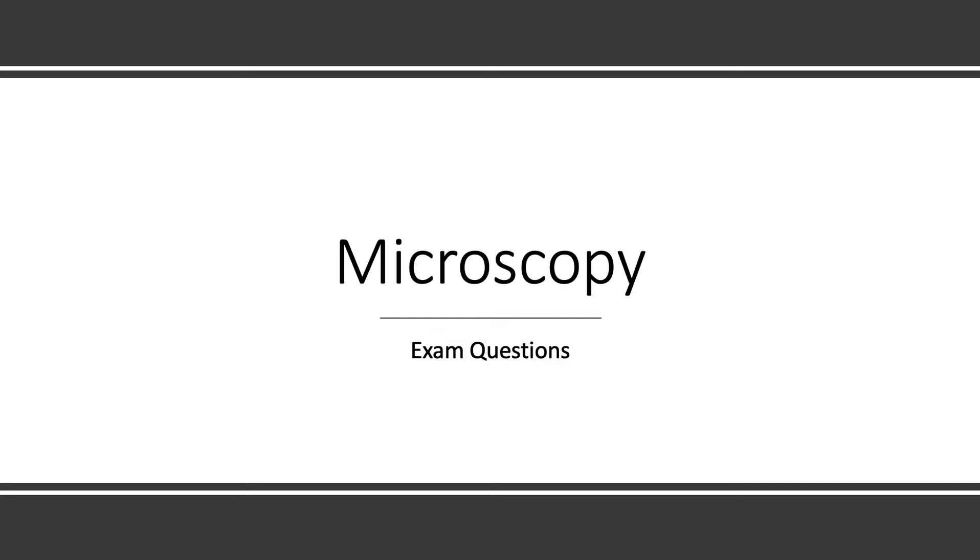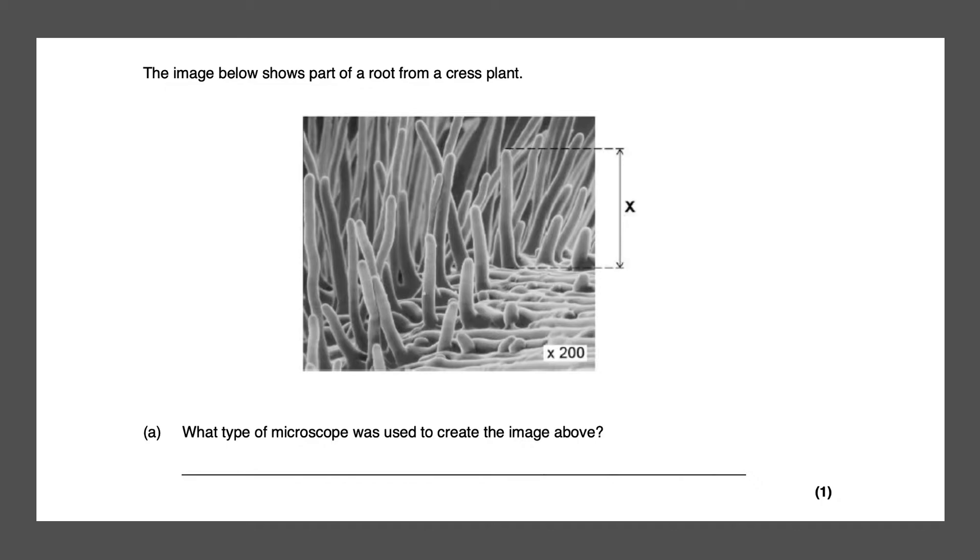So let's get started. Our first exam question states, the image below shows part of a root from a crest plant. What type of microscope was used to create the image above? There's a clue over here. As you can see, it says times 200 magnification.